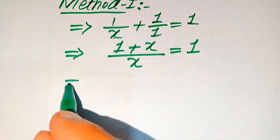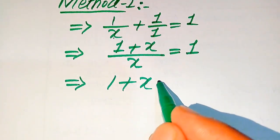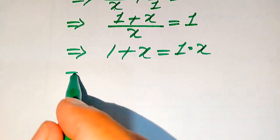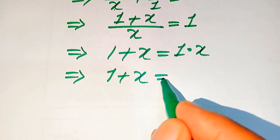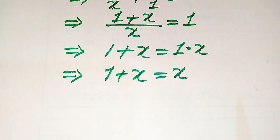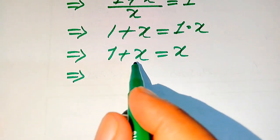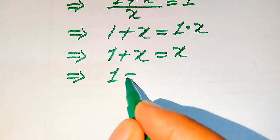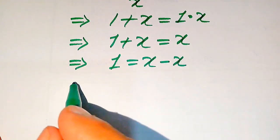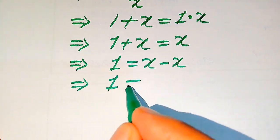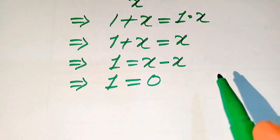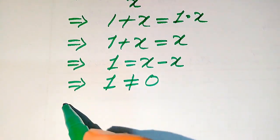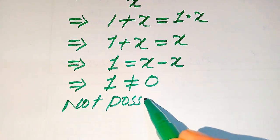In the next step, we move x to the right-hand side, so it becomes 1 plus x equals 1 multiplied by x, which gives us 1 plus x equals x. Now we move the variable term to the right-hand side: moving plus x gives minus x, so we get 1 equals x minus x, which equals 0.